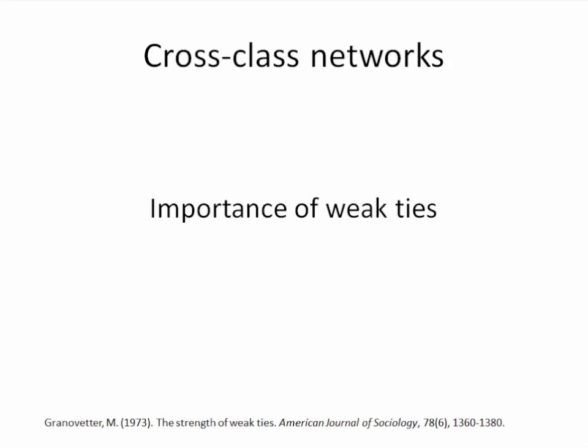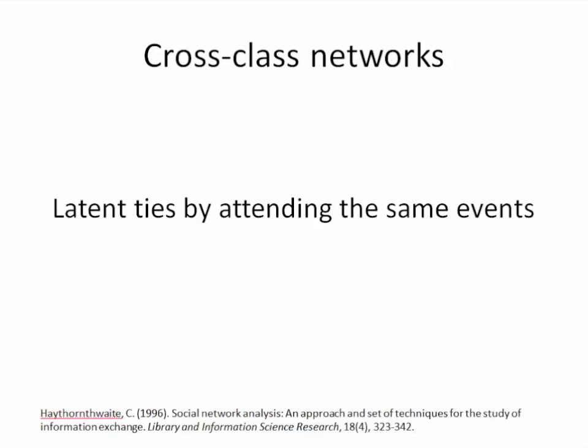This idea comes from already existing research in general social network analysis. The importance of weak ties is typically associated with creating many opportunities — for example, finding a job or, in the case of education, accessing different types of information. Those individuals who have better and broader weak ties are better placed to perform better. At the same time, the researcher Catron-Tweight, already in the 90s, discussed the opportunities for individuals to activate latent ties by simply being associated through attending the same event, for example, the same course. This is the idea behind cross-class networks.